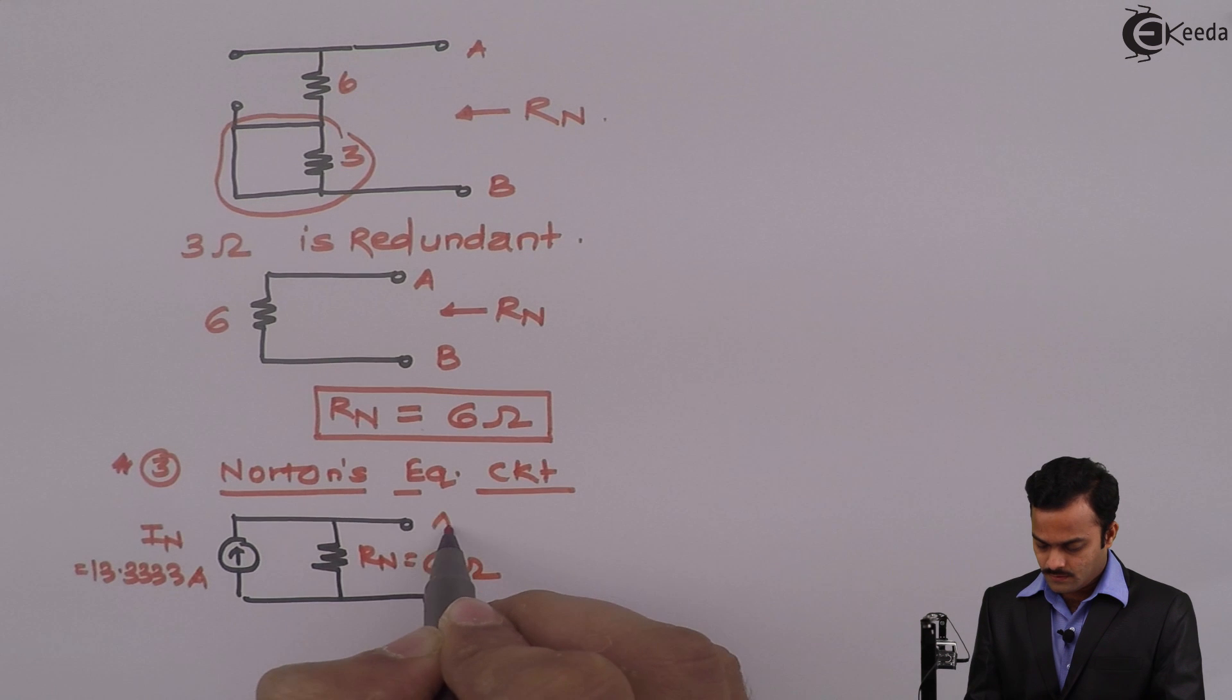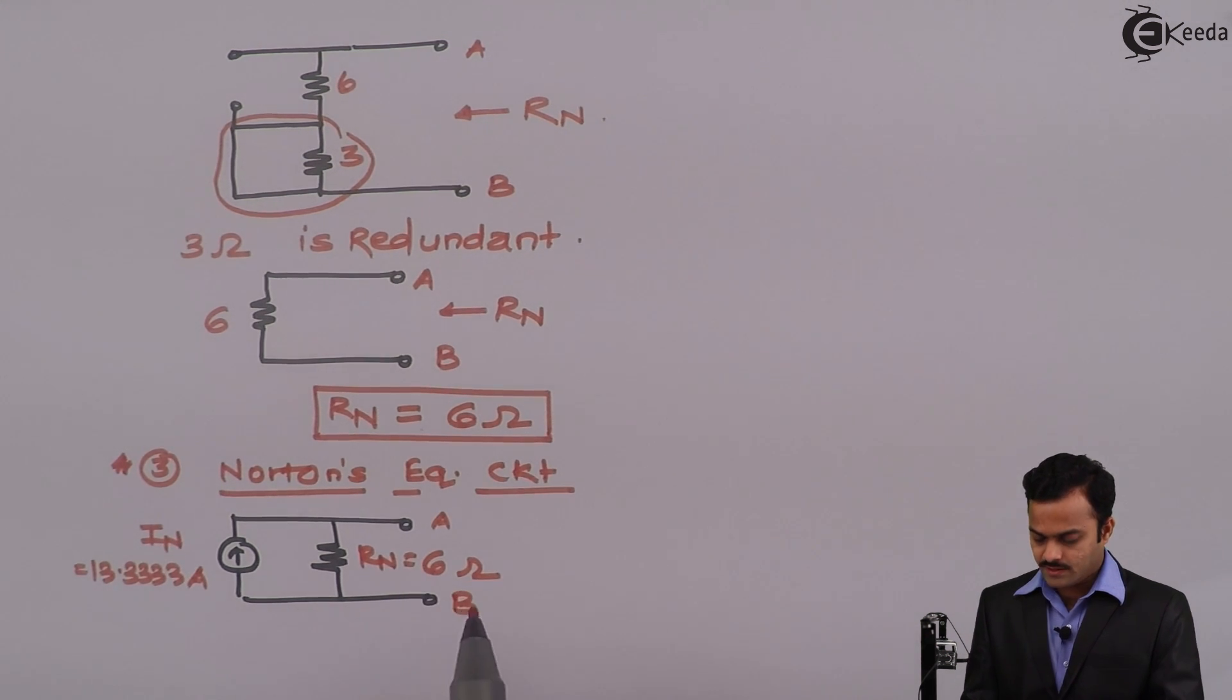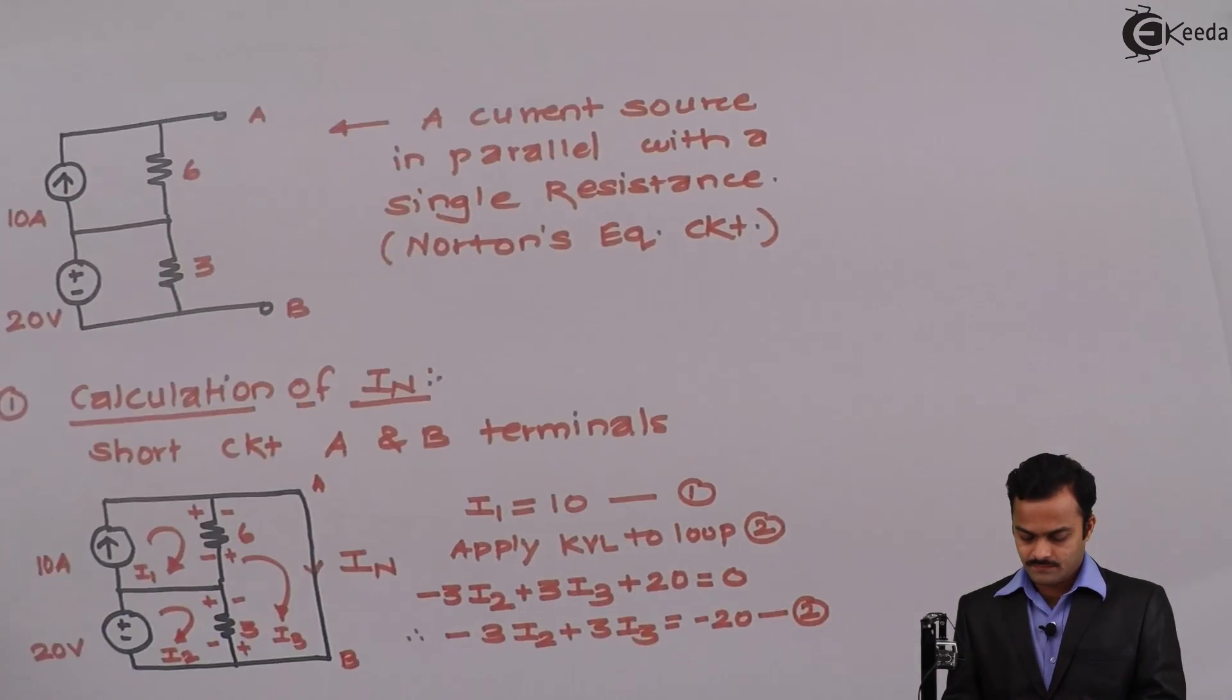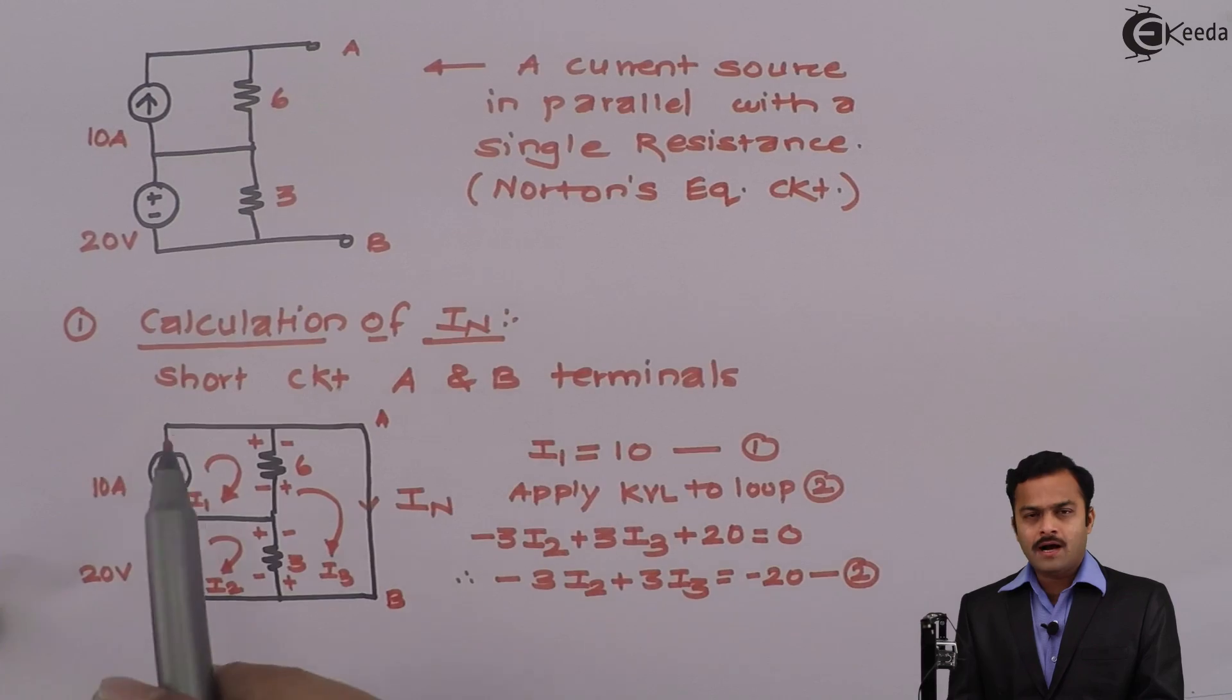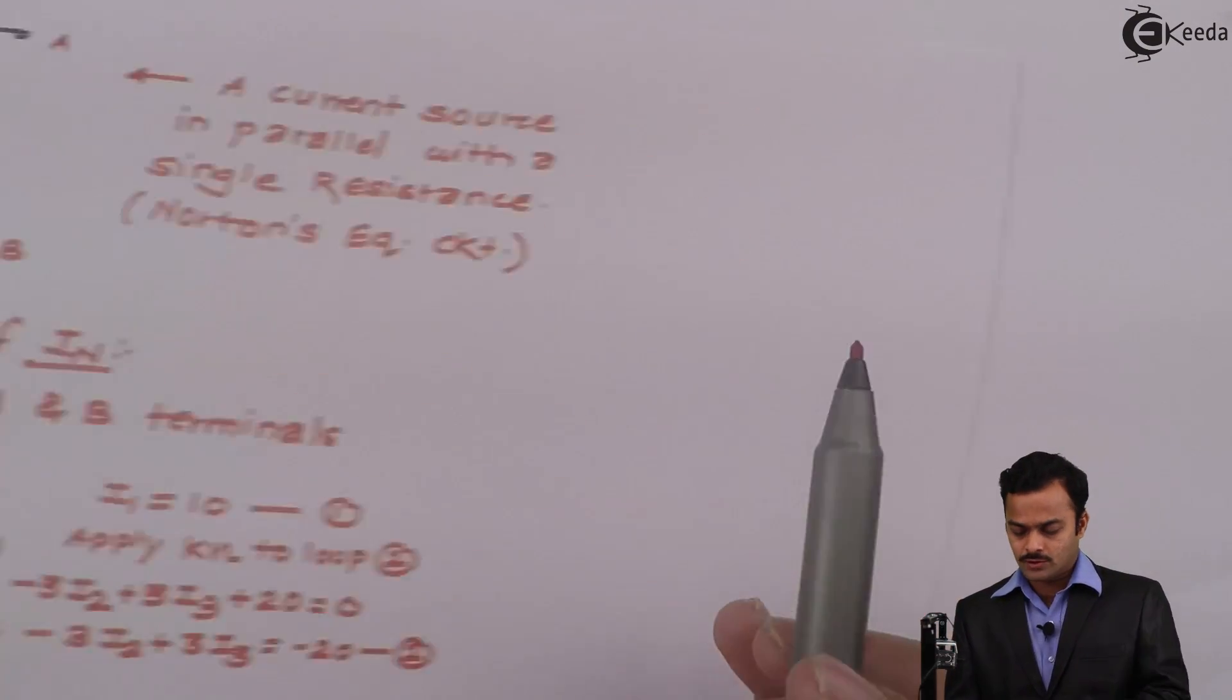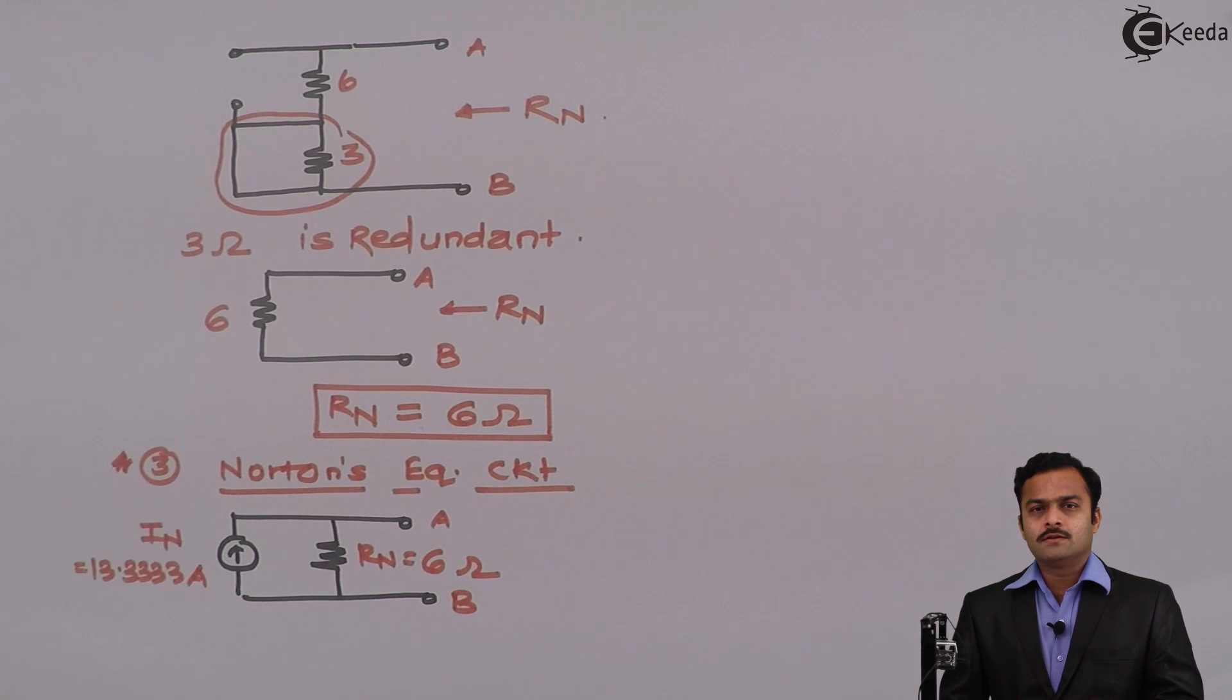So In we got 13.3333 ampere and Rn we got 6 ohm, and these are the terminals A and B. So what we have done, we have replaced the original circuit which is like this by a current source with a single resistance parallel to it by using Norton's theorem. So in subsequent videos we will solve more numericals based on Norton's theorem. Thank you.